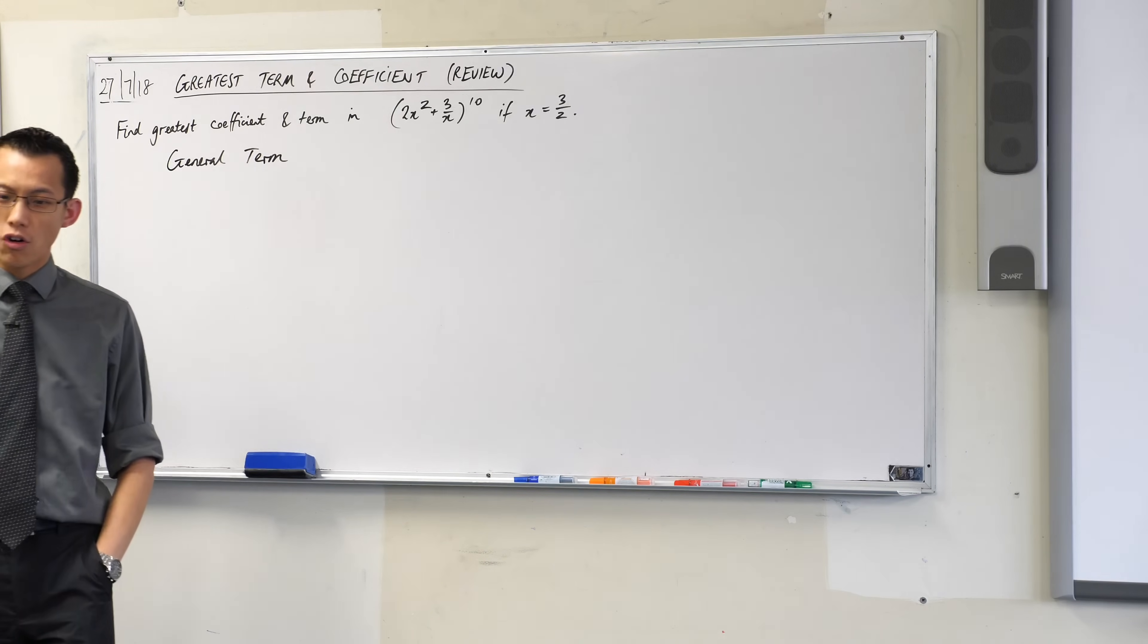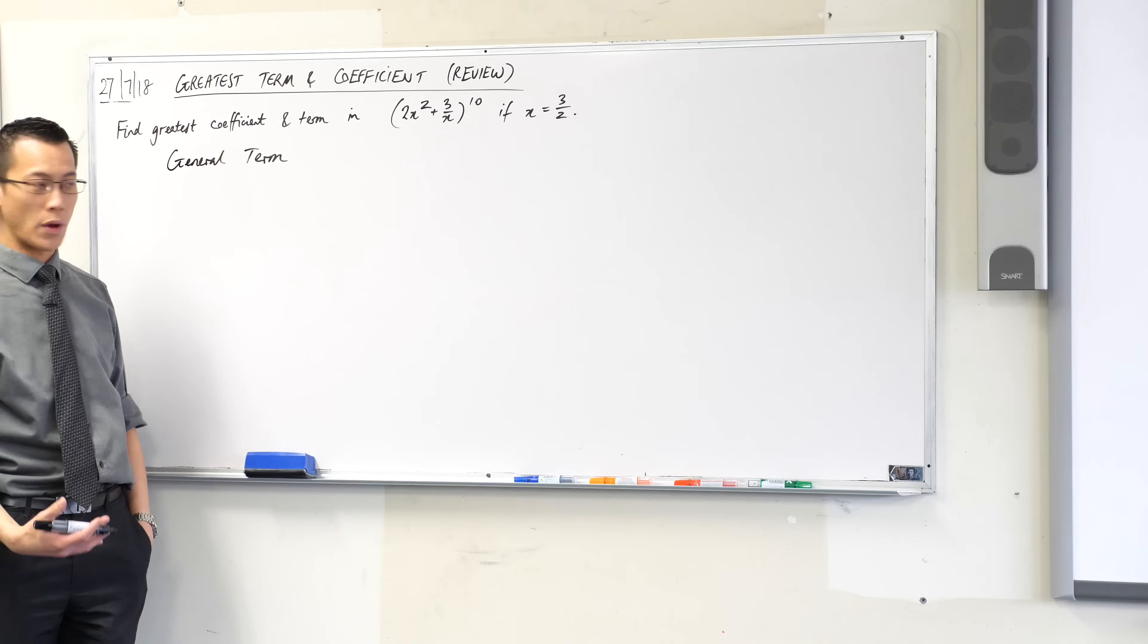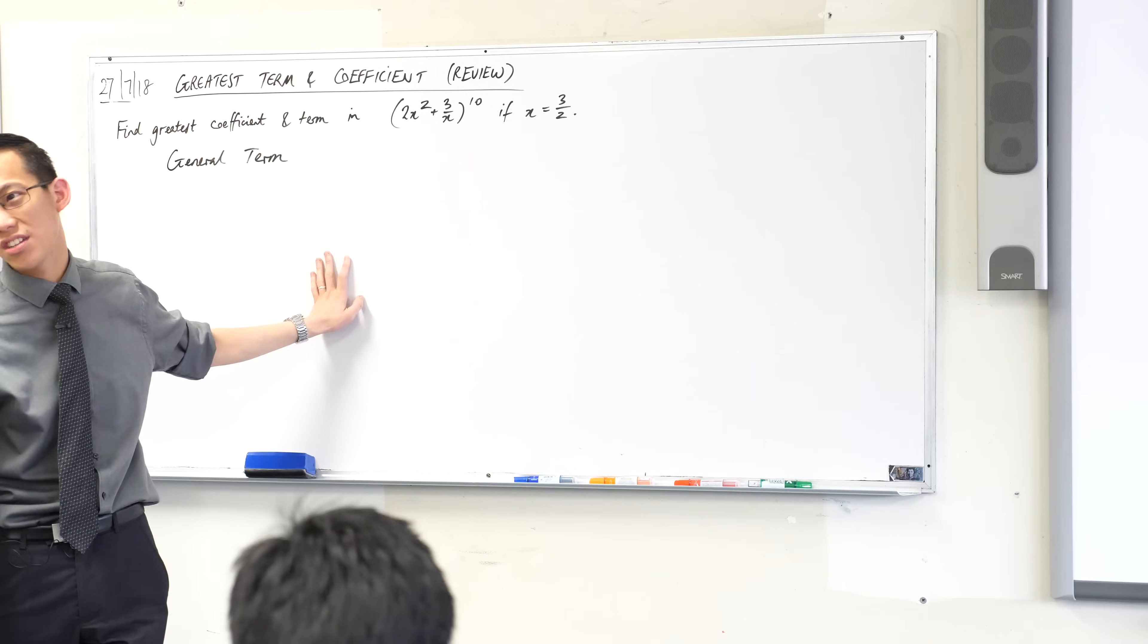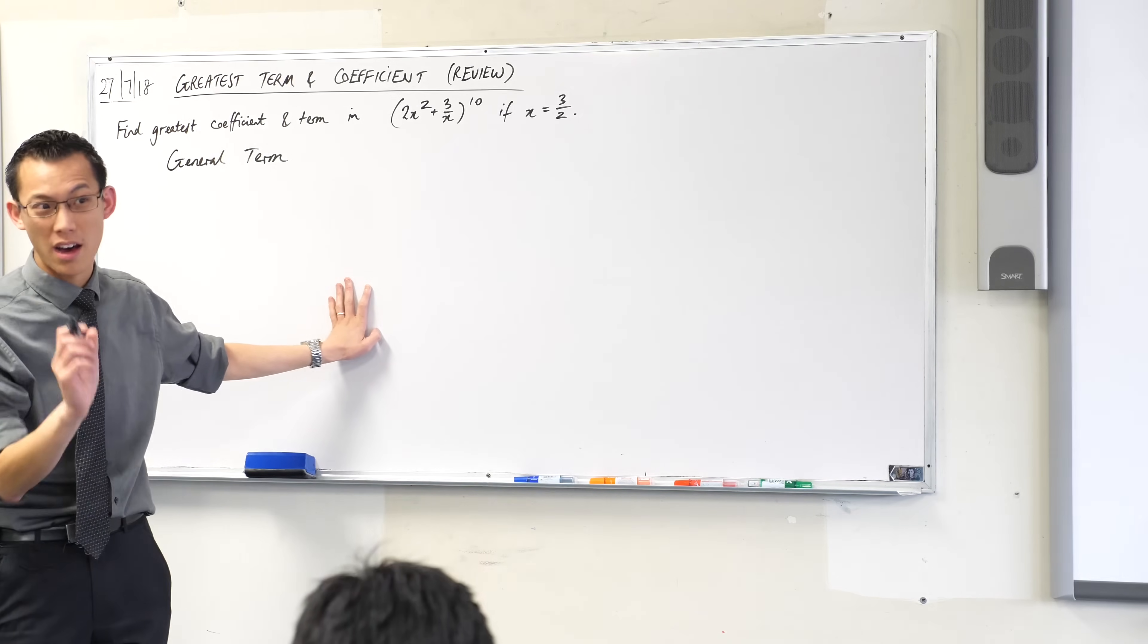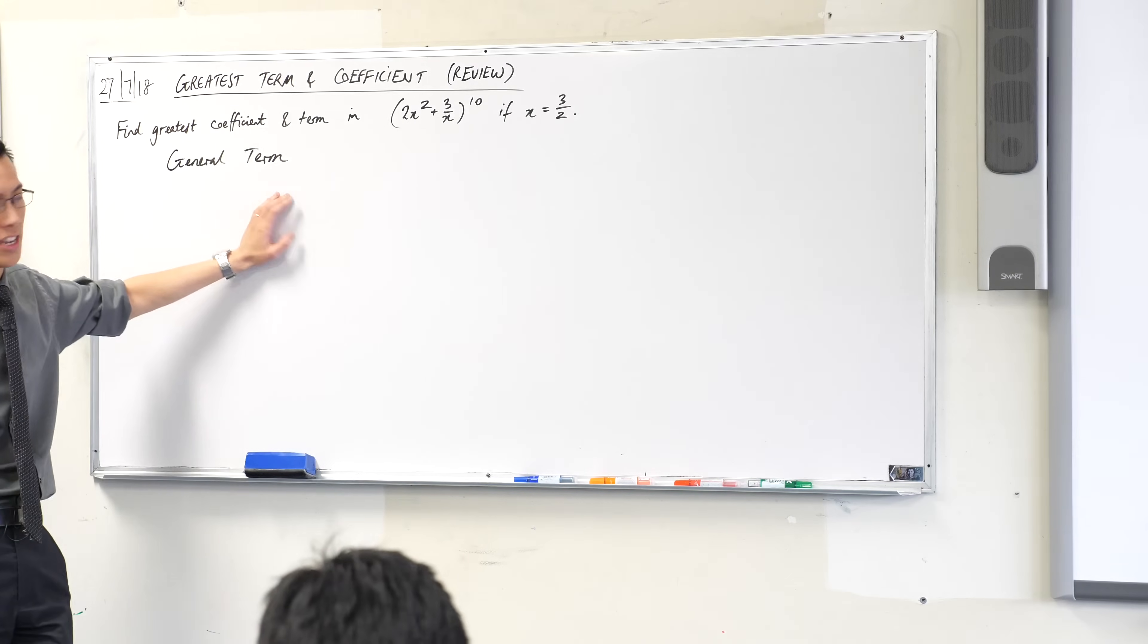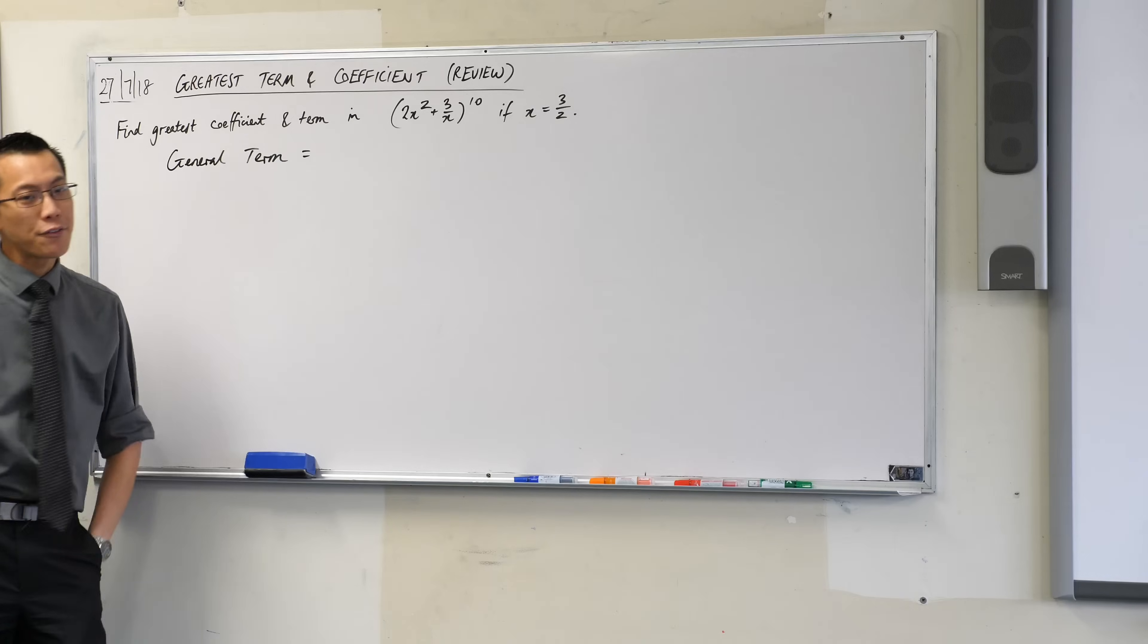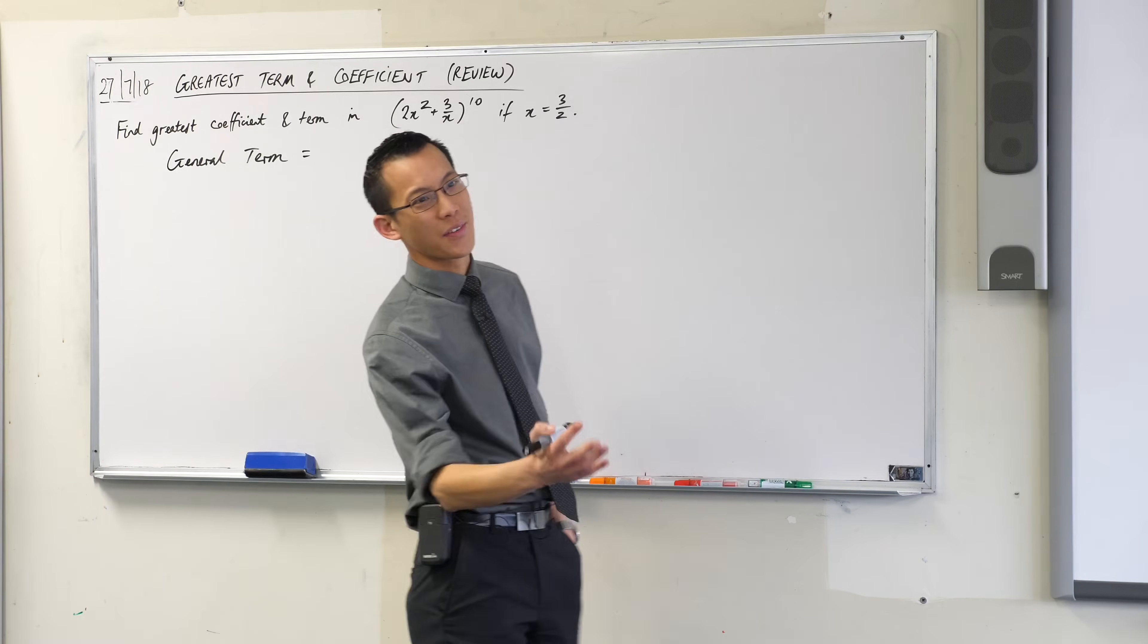Now almost regardless of whether the question is a coefficient or a term question, I will write down the general term first, because as you'll see in a couple of minutes and as you actually know, the coefficient is part of the term. So if you can write down the whole term you will also have the coefficient, and in this case I'm asking you for both, so therefore we might as well start with this. Every term in this expansion is going to have three components.